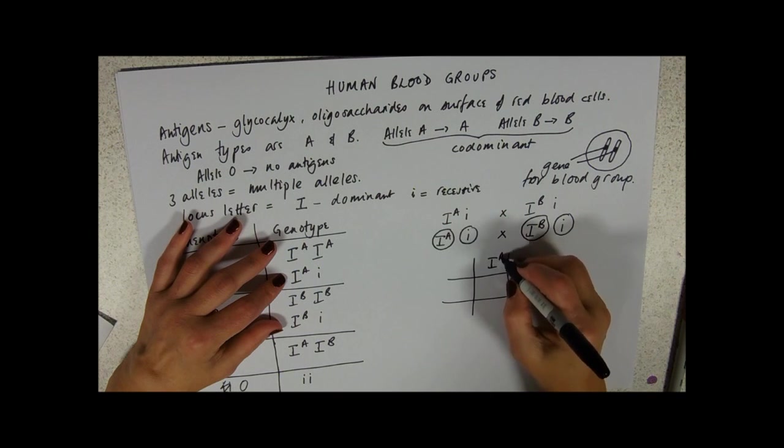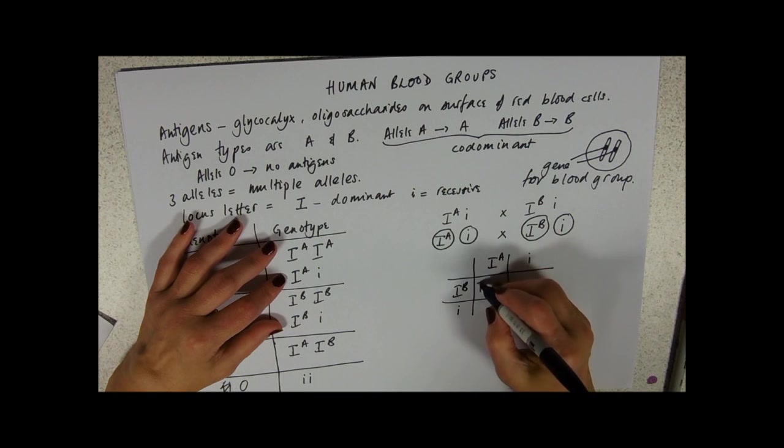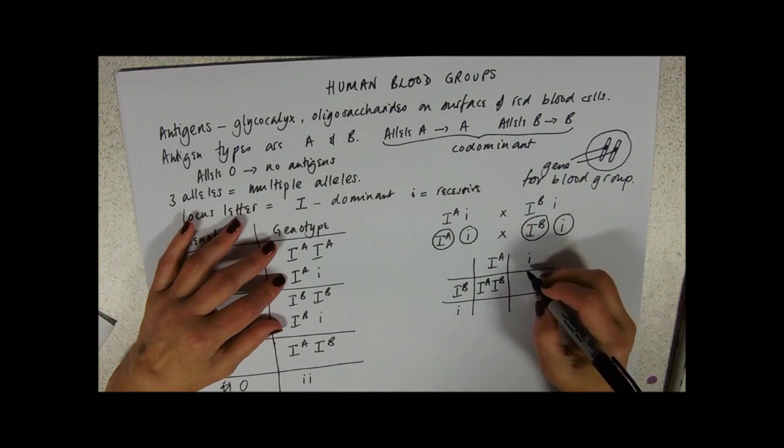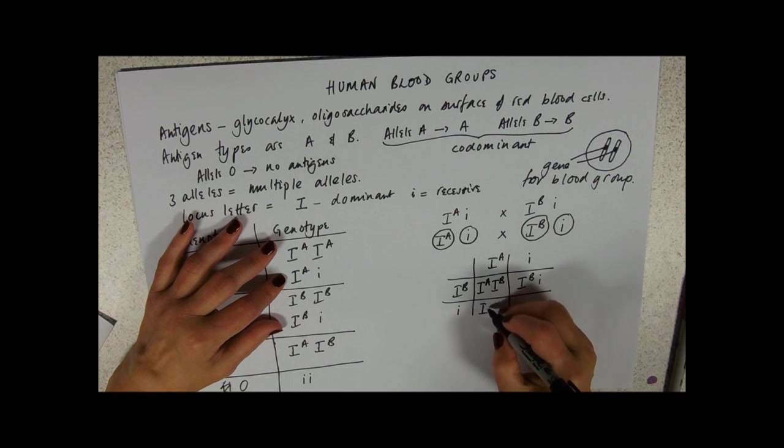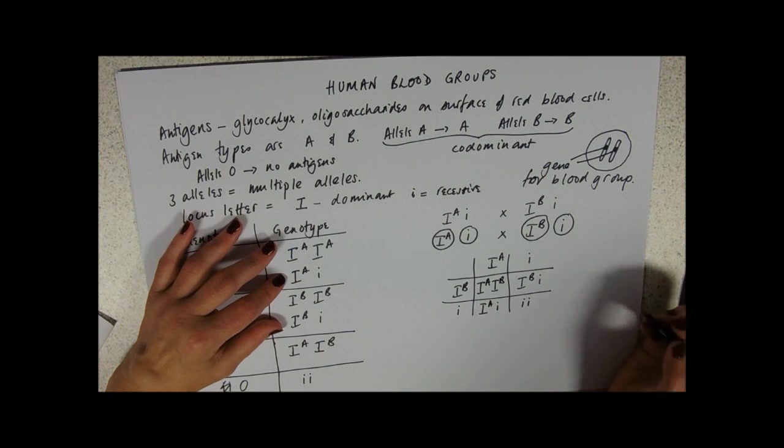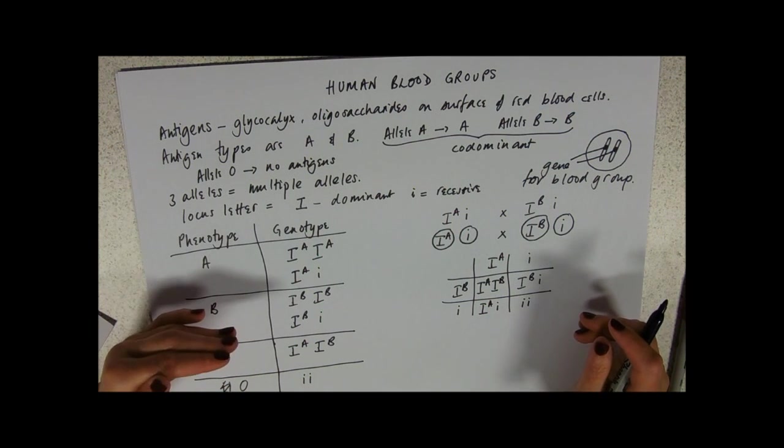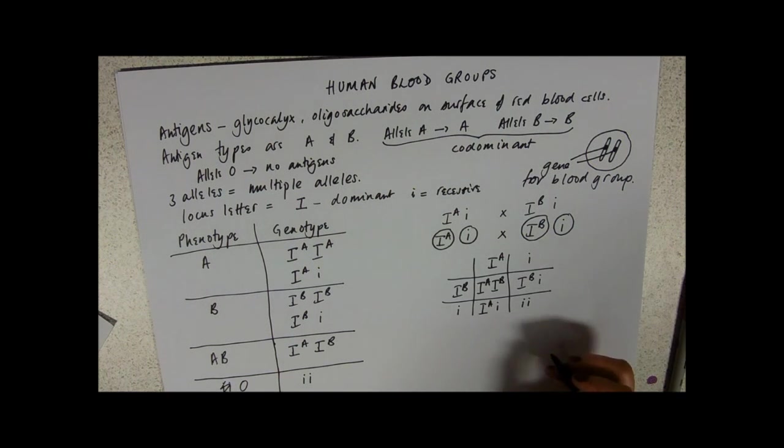Parent one. And as possible offspring, we could get one with blood type AB, one with blood type B, one with blood type A, and one with blood type O. So parents with blood group A and B could potentially have any one of these phenotypes. Again, 25% chance each time, one out of every four.